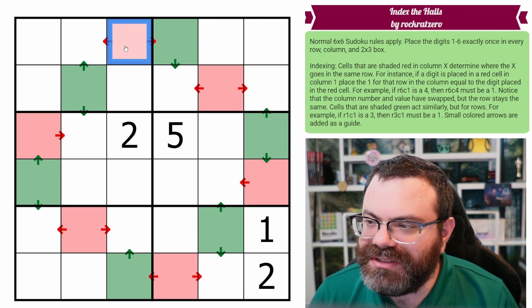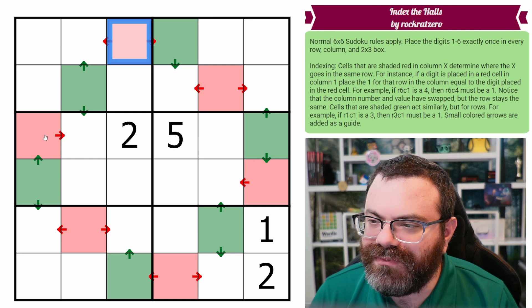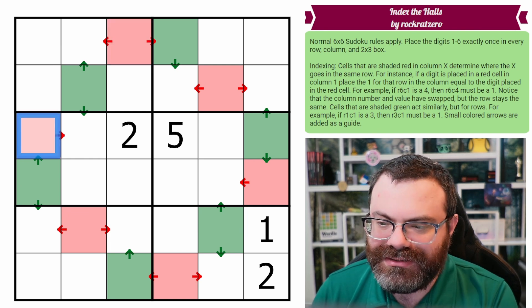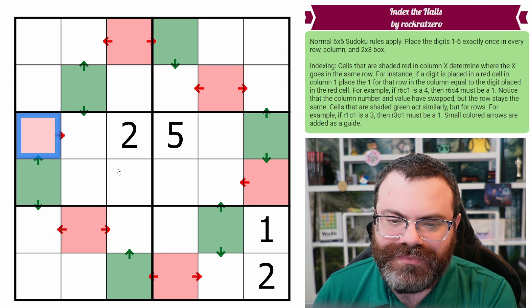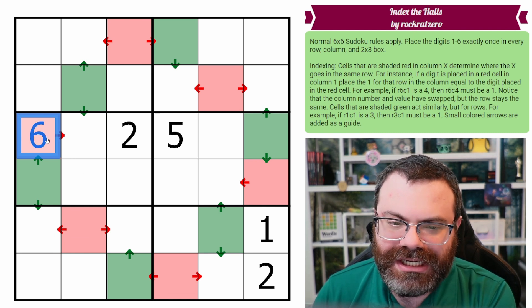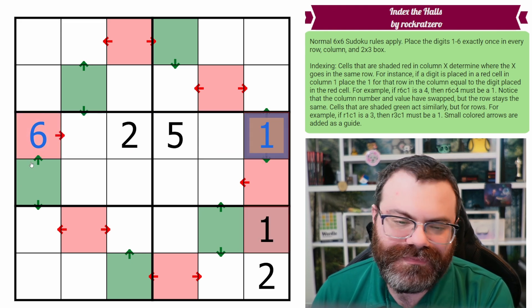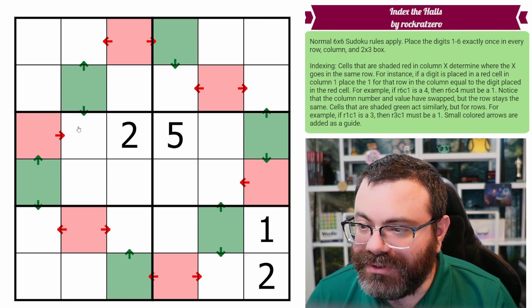For instance, if a digit is placed in a red cell in column 1, place the 1 for that row in the column equal to the digit. So there's a red cell in column 1. If we put, say, a 6 here, then that means we go to column 6 in the same row and we put a 1 there. It's not going to work, but that's our example.